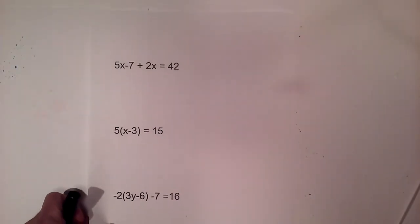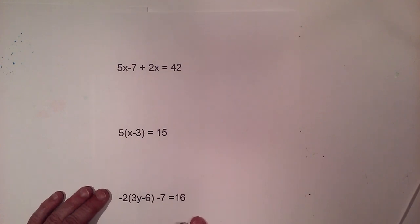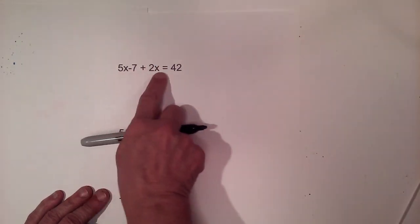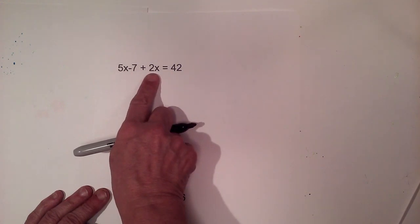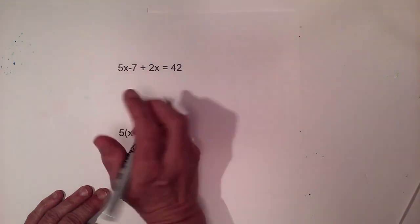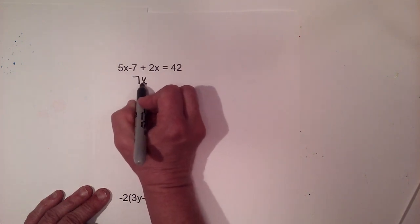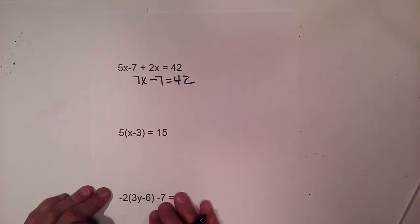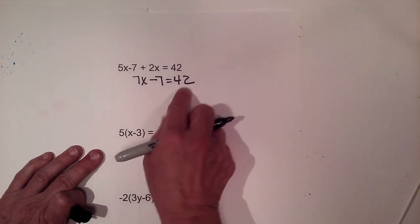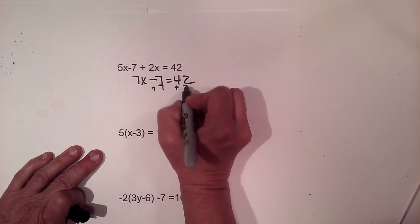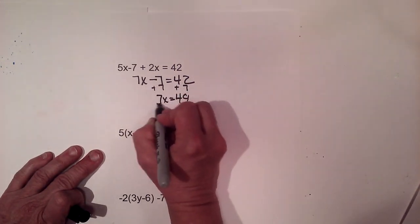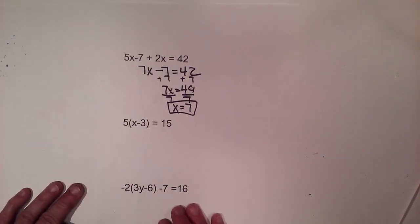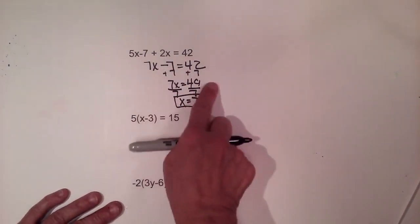Now let's move to a more complicated problem where we have more than one variable on one side. We look at the equal sign and simplify the left side by combining like terms: five x and two x. Five x plus two x is seven x. Bring down the constant negative seven, equal to forty-two. Now we add seven to both sides to get forty-nine, then divide by seven, so x is positive seven.